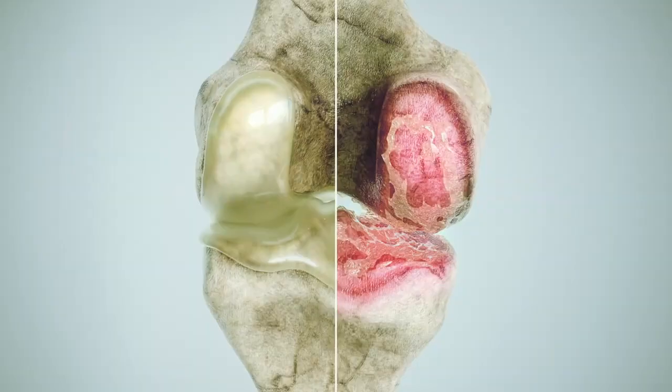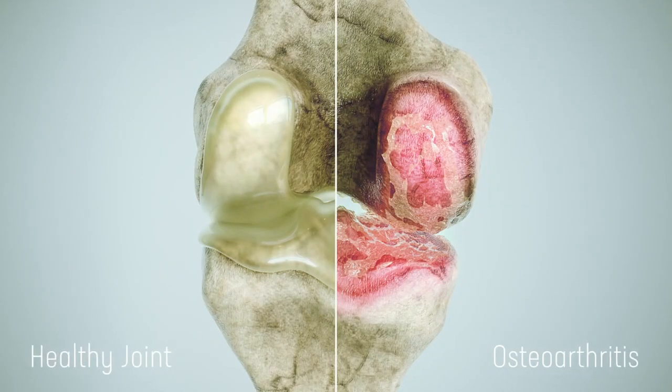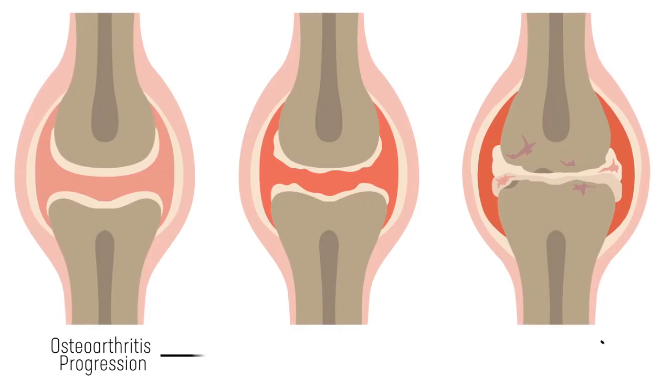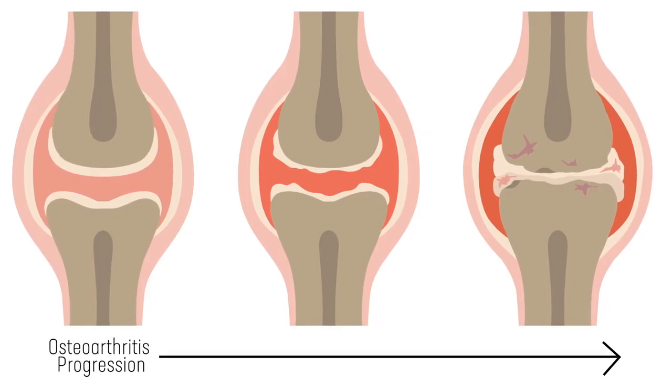Osteoarthritis is characterized by degeneration of articular cartilage and other bony changes in the joint. It's actually the opposite of osteoporosis.